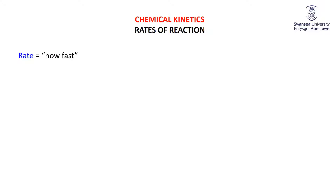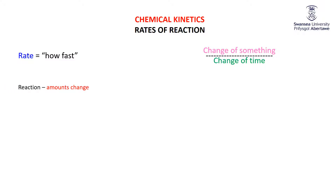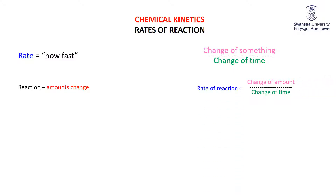When we talk about rate, it means how fast. Usually when we talk about rate or how fast, we're talking about the change in something over the change in time. When you're talking about how fast you're going, you're talking about the change in distance over the change in time. And in a reaction, the amounts of substances change, so the rate of reaction is simply the change in the amount of substance over the change in time.